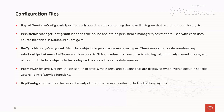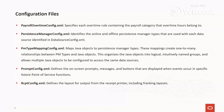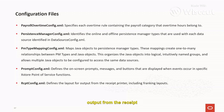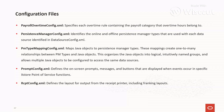The prompt_config.xml file defines on-screen prompts, messages, and buttons that are displayed when events occur in a specific Access Store Point of Service function. The receipt_config.xml file defines the layout for output from the receipt printer, including franking layout — controlling which fields display and where on the receipt.